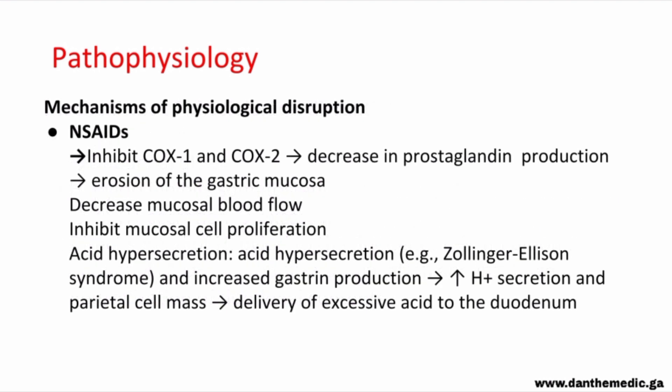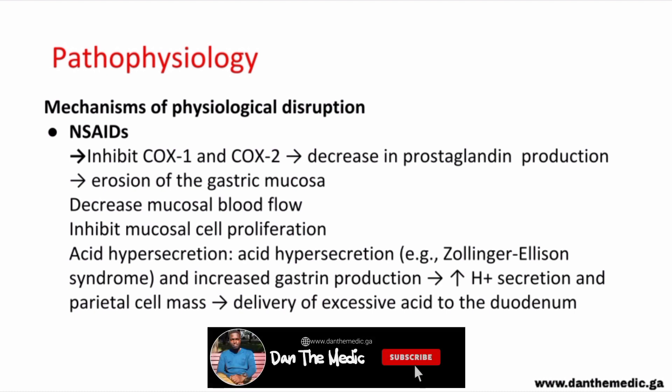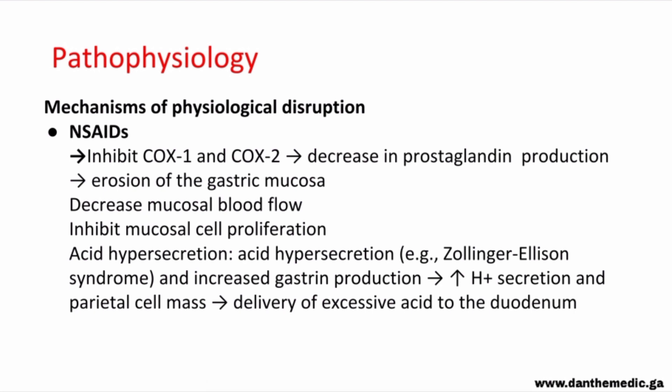As for the mechanism of physiological disruption from chronic NSAID use: NSAIDs cause inhibition of COX-1 and COX-2, decreasing prostaglandin production, which causes erosion of the stomach mucosa. There can also be decreased mucosal blood flow, causing inhibition of mucosal cell proliferation. Another mechanism is acid hypersecretion — for example, in Zollinger-Ellison syndrome, characterized by acid hypersecretion and increased gastrin production, there is increased secretion of hydrogen ions and excessive acid delivered into the duodenum.